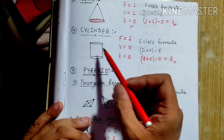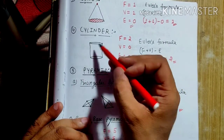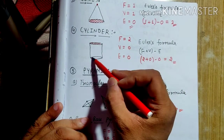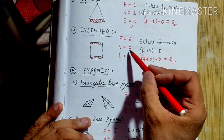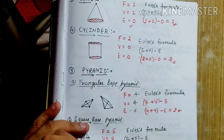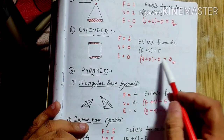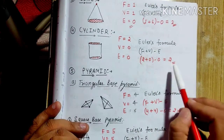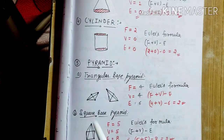The next shape is the cylinder. There are two faces but no vertex and no edges. Applying Euler's formula, we can see that the answer is 2.